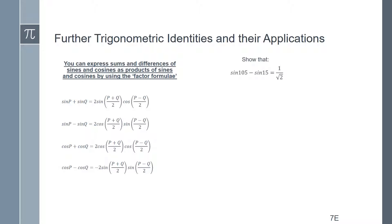We can do sums like this: sine(105°) minus sine(15°) equals 1/√2 — we need to show that. Obviously we could push the buttons on a calculator, but that wouldn't win any prizes in an exam. So we think about the numbers 105 and 15, and we think about the formula: p+q over 2, and p-q over 2.